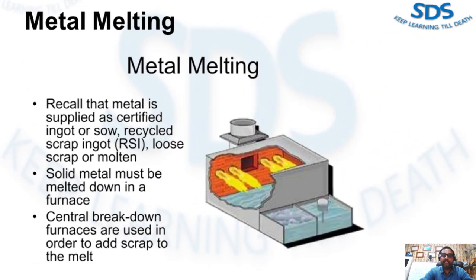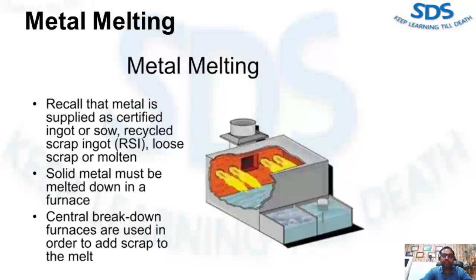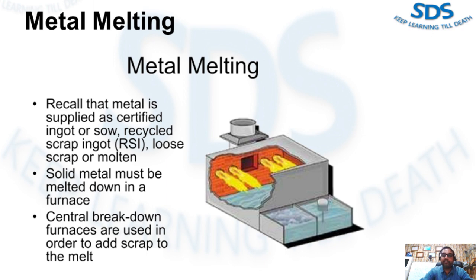In most die casting facilities, metal is supplied as certified ingot, recycled scrap ingot (RSI), loose scrap, or molten. In the case of solid metal, the charge must be melted down in a furnace. Large die casters employ central breakdown furnaces in which return scrap such as gates, runners, and scrap castings are also added to the melt.